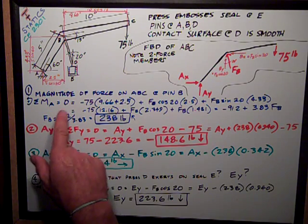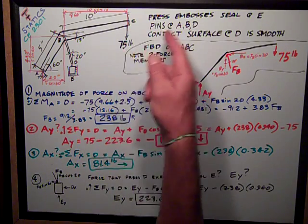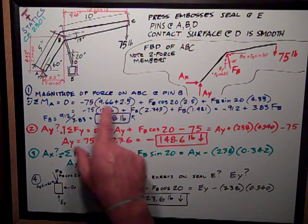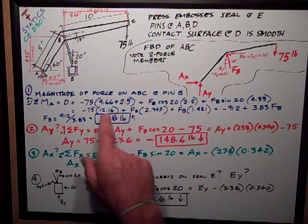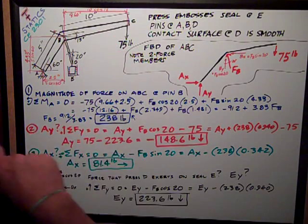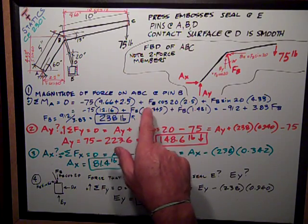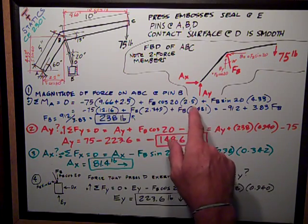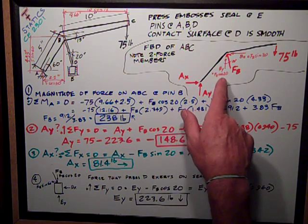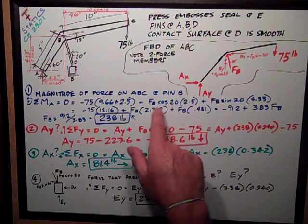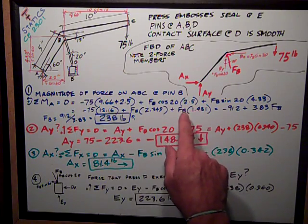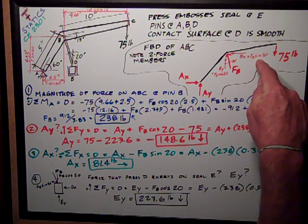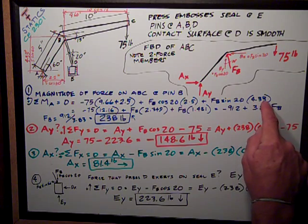Counterclockwise is positive. That's equal to negative 75, starting off here at the right end, times the horizontal distance, 9.66 plus 2.5 feet. 9.6, 2.5. And it's negative because it's causing clockwise rotation about point A. The first one I do is the vertical force, which is FBY or FB cosine of 20 times its moment arm of 2.5 inches, rotating counter-clockwise, plus also because it's going counter-clockwise FB sine of 20, BX times its vertical distance of 4.33 inches.